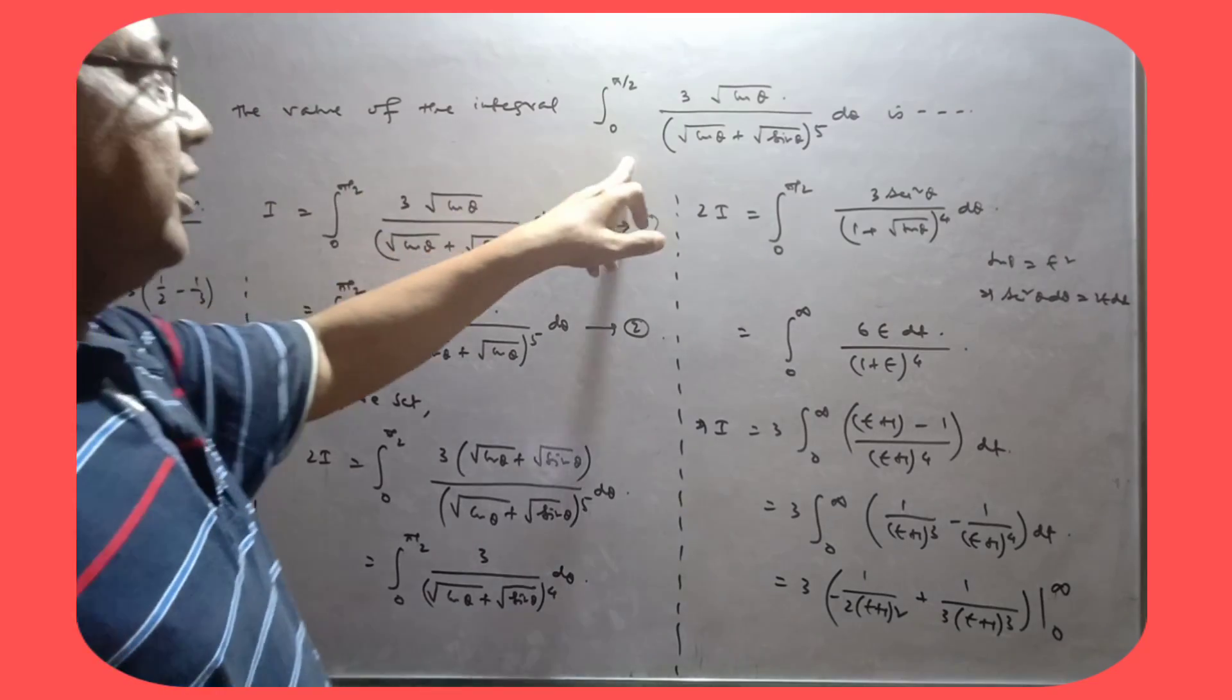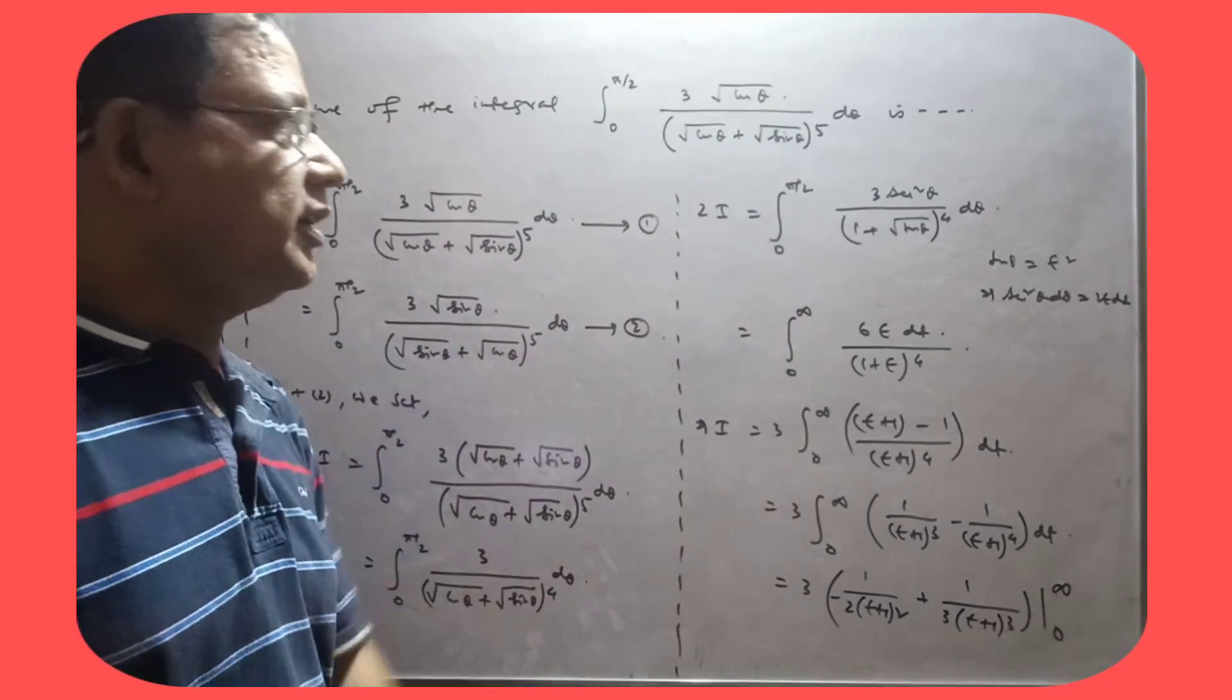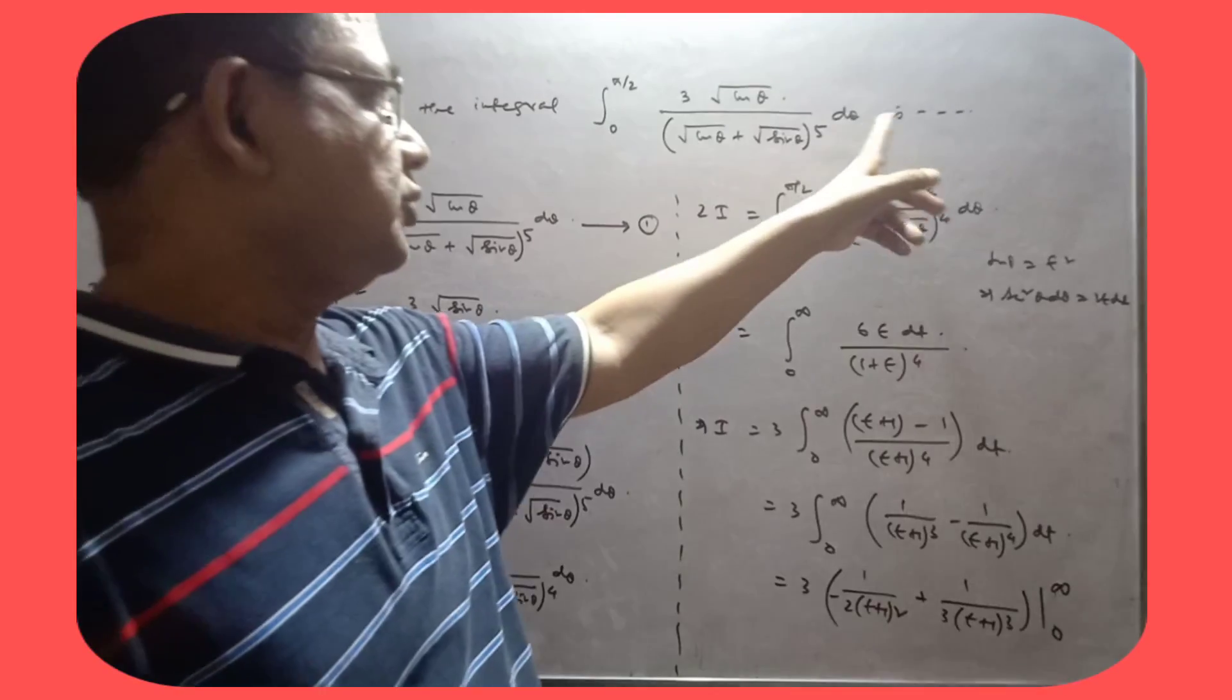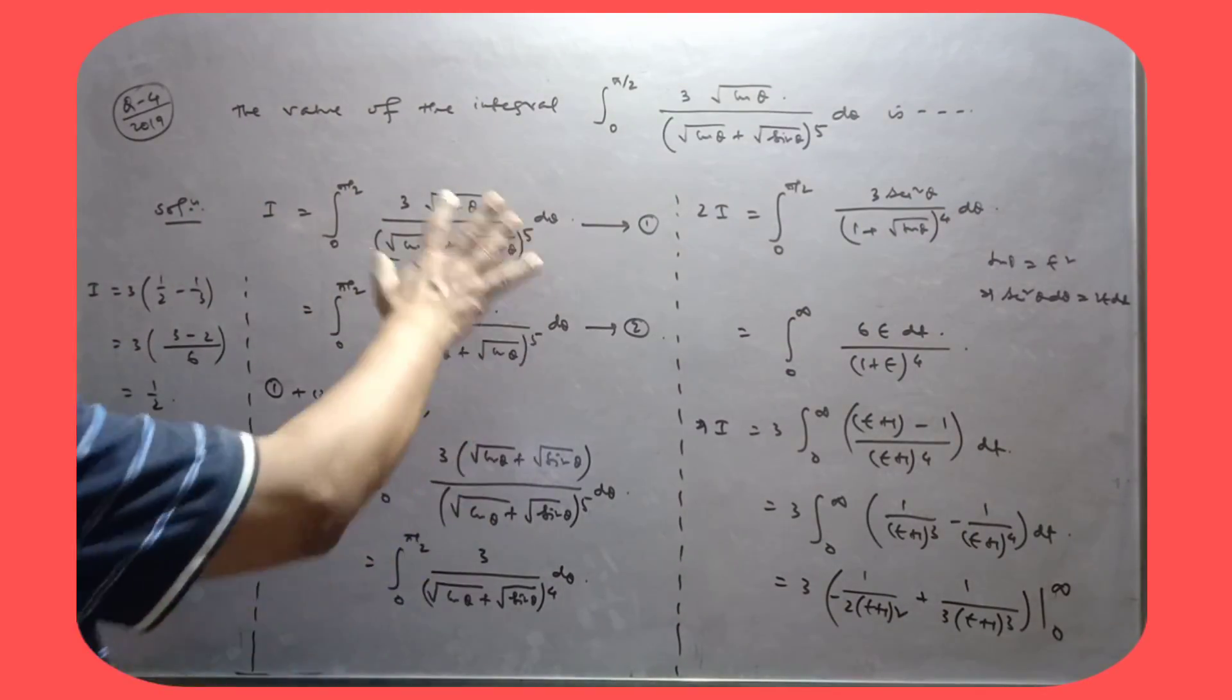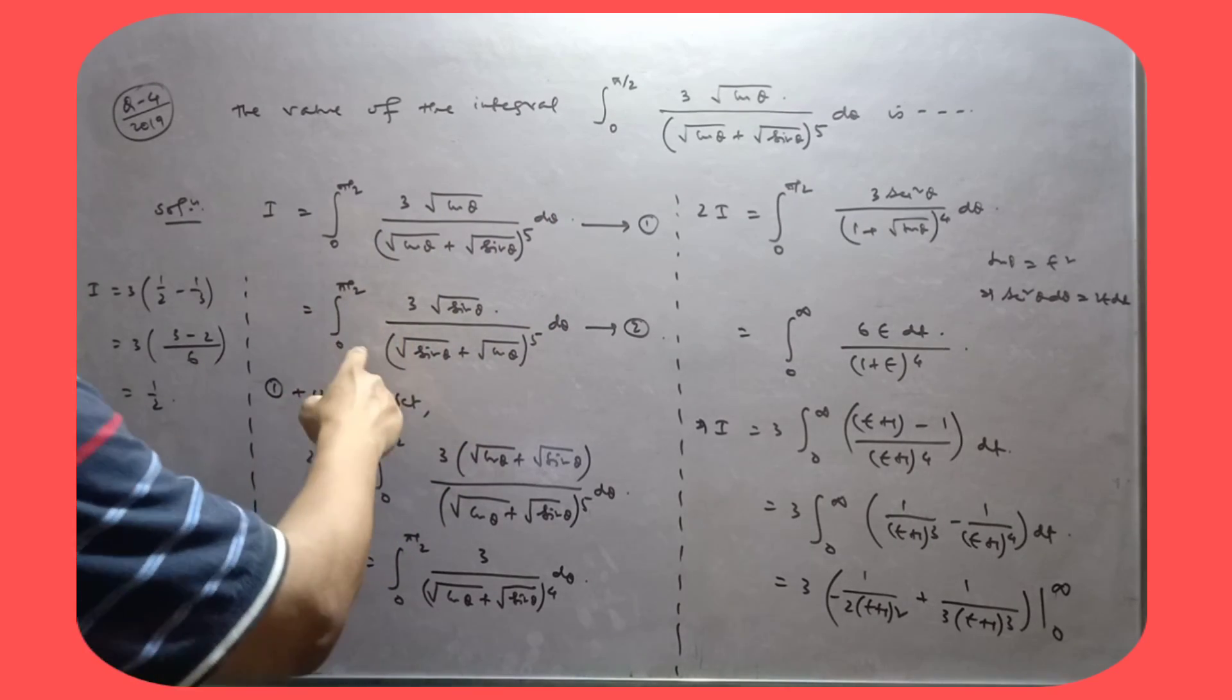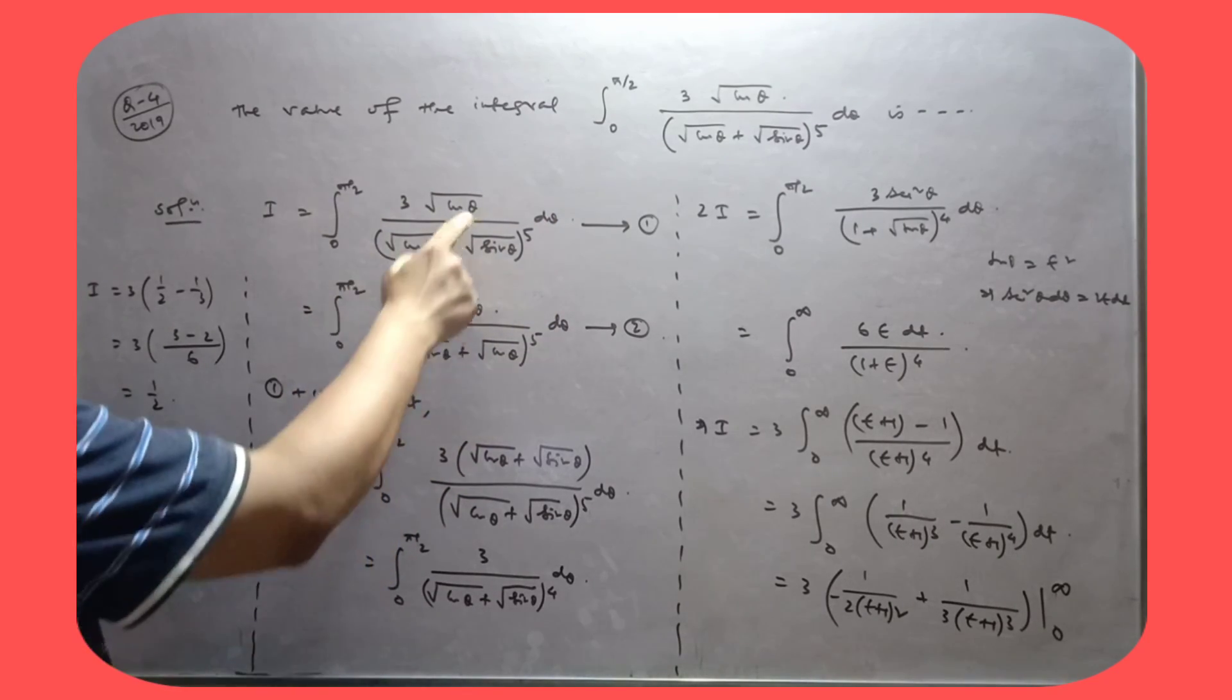The value of the integral 0 se pi by 2, cube root cos theta by cos theta, root cos theta plus root sin theta, whole to the power 5 d theta. So i is equal to this. That is, ee is what, yeh pe king property ko apply kiya.